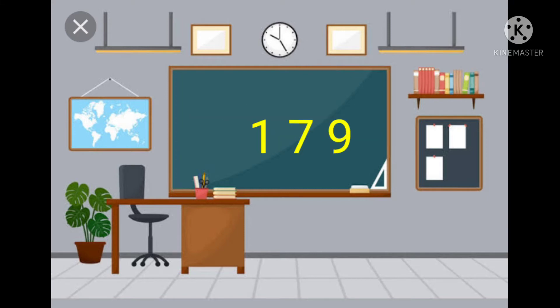Children, look at this number. How can we read it? In three-digit numbers, we have three places: hundreds, tens, and ones. When we read three-digit numbers, we read the hundreds first, then read the last two digits together.